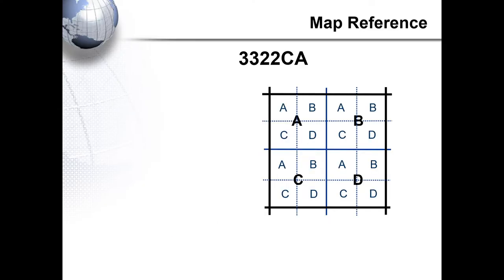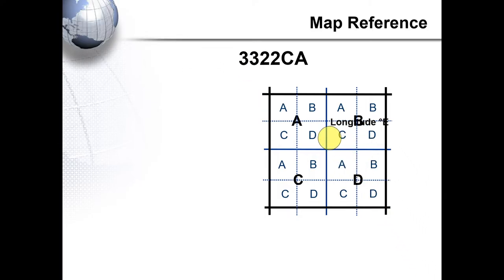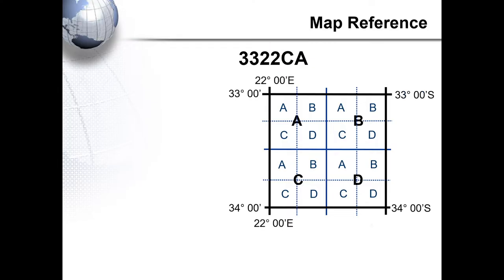Let's have a look at our map reference. Grade 12s, your map title is your key when drawing up your map reference. The 33 in this title refers to our latitudinal degrees. The 22 refers to our longitudinal degrees. The C in the map title refers to the larger blocks used to divide our 1 degree by 1 degree grid block into 4 smaller blocks of 30 minutes by 30 minutes. It's important to always add your degrees south and degrees east.